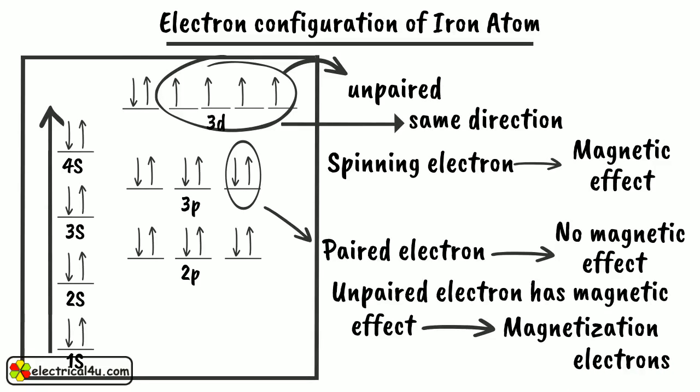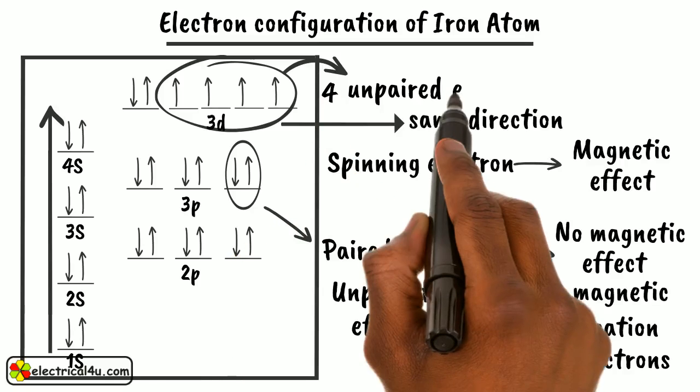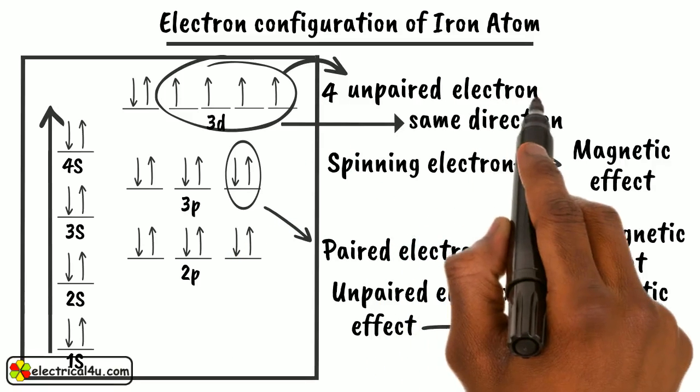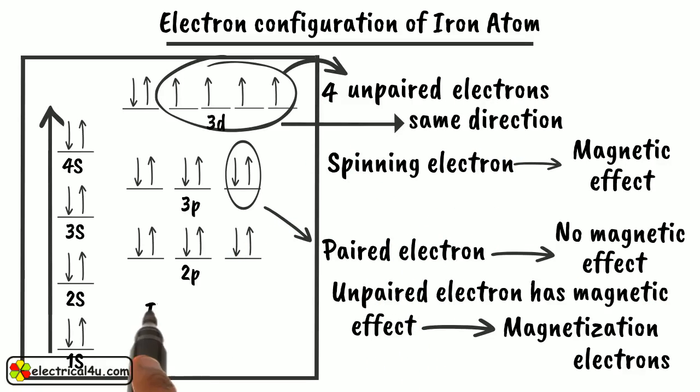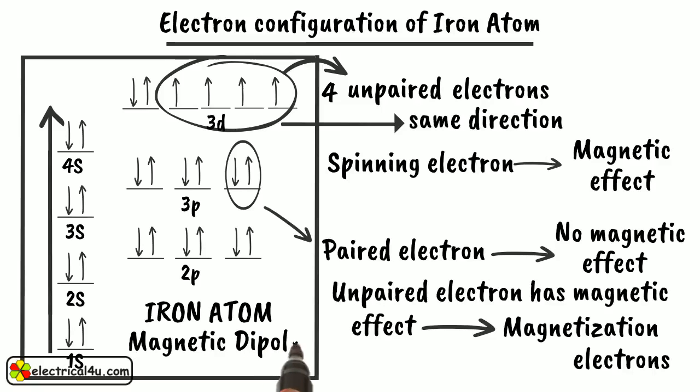In iron, there are 4 such unpaired electrons spinning in same direction. As a result, each iron atom gets a resultant magnetism. Therefore, each iron atom behaves as a magnetic dipole.